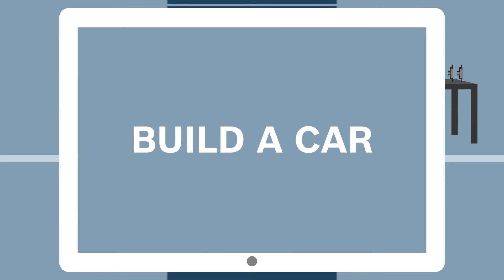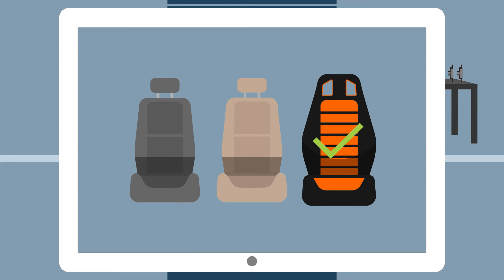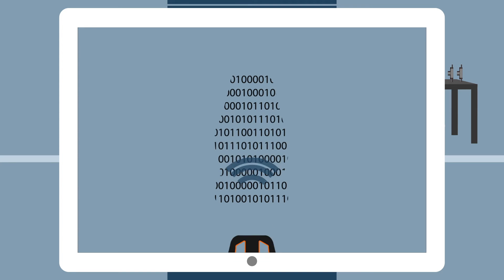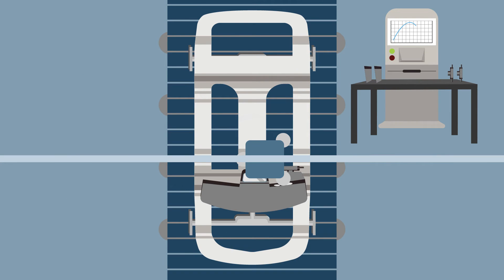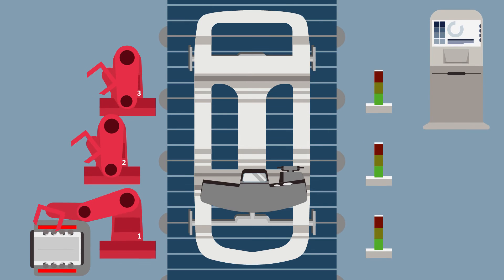Suppose you change your mind about your car's seats. Not a problem. Thanks to Industry 4.0 technology, the car manufacturer has real-time data from the complete production process. The configuration change is made and confirmed to the customer, and orders for the new seats are sent to the supplier.